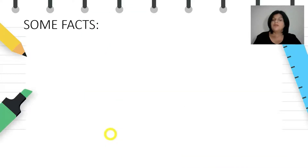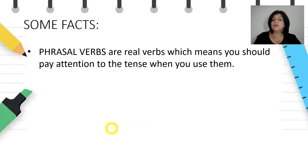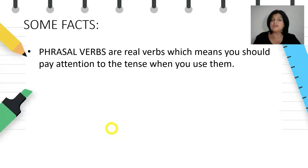Some facts about phrasal verbs. Phrasal verbs are real verbs, which means you should pay attention to the tense when you use them. When you use them in a sentence, you need to take care of the grammatical time.